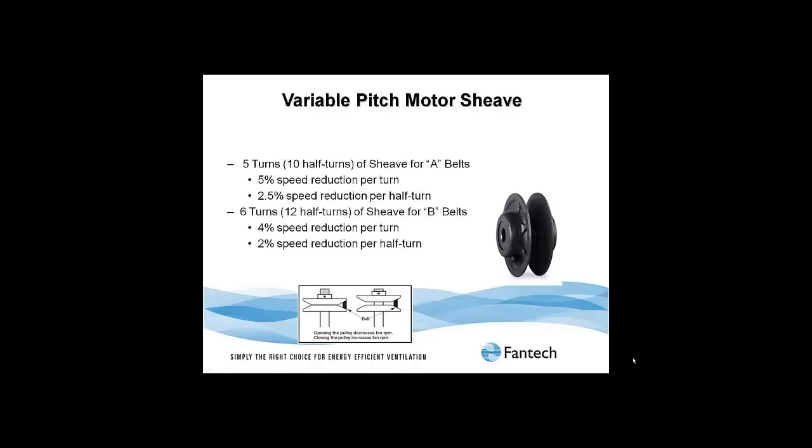With an A or 4L type belt, the sheave can be opened 5 complete turns for a maximum reduction of approximately 25%. With a B belt, the sheave can be opened 6 complete turns for a maximum reduction of approximately 24%.